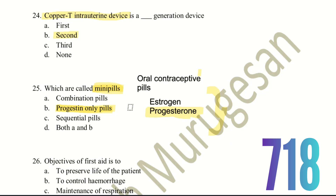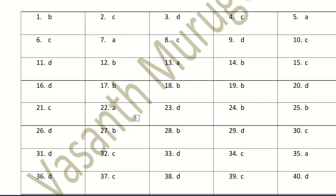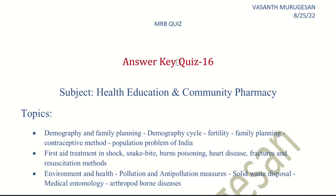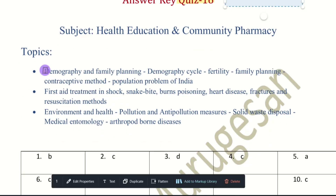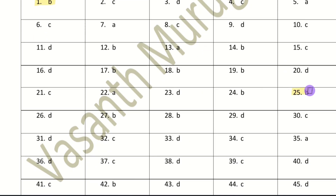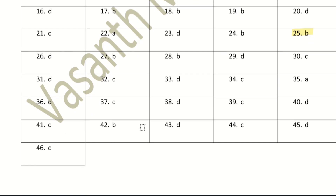With these 25 questions we finish part 1 of Quiz 16. The remaining 46 questions will be covered in part 2. Part 1 covered demographics and family planning. Part 2 will cover first aid treatments and environment and health topics — questions 26 through 46.